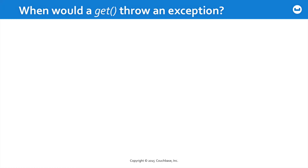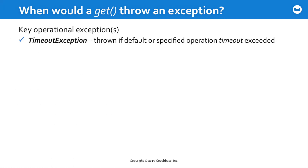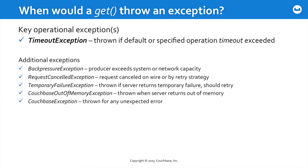So when would a get throw an exception? The key operational exception would be a timeout exception. You could pass a timeout to an individual get operation, or set a default timeout via an environment variable when the cluster is created. There are other exceptions that could be thrown as well — back pressure, a cancelled request, a temporary server failure, Couchbase out of memory, or some other general exception. You can look in the documentation for more detail on all of these.